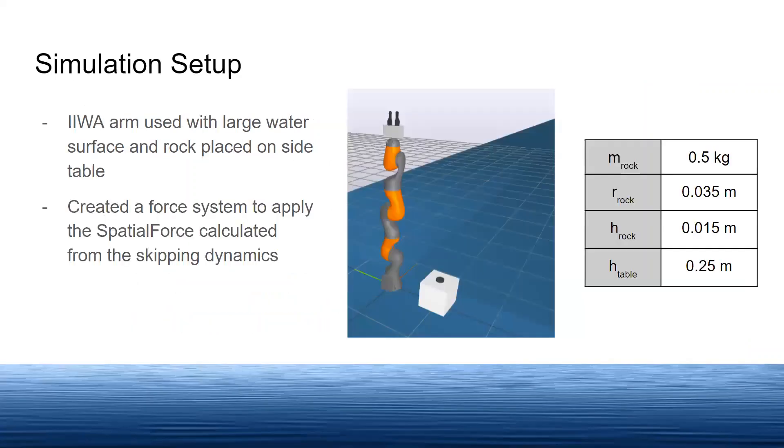For our simulation setup, we have the IWA arm positioned next to the water surface and table. Based on the dynamics, we chose a flat hockey puck shape for our rock and centered it on top of the table. Behind the scenes, we implemented a force system to apply the spatial force from the water.